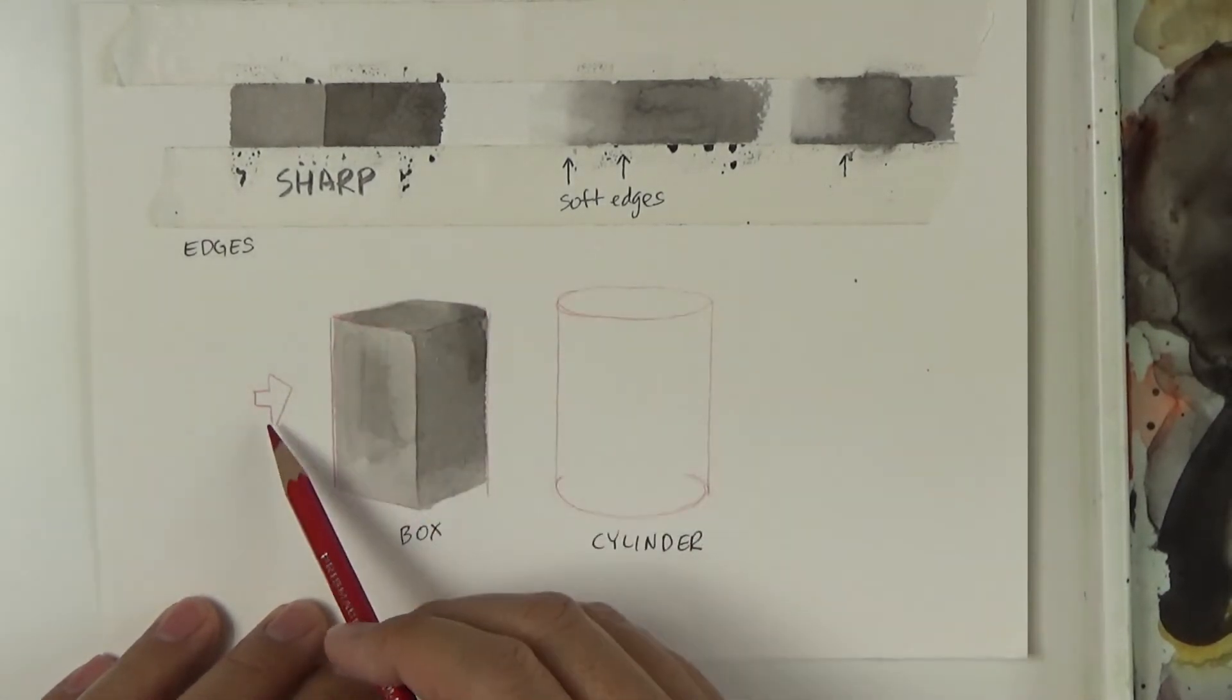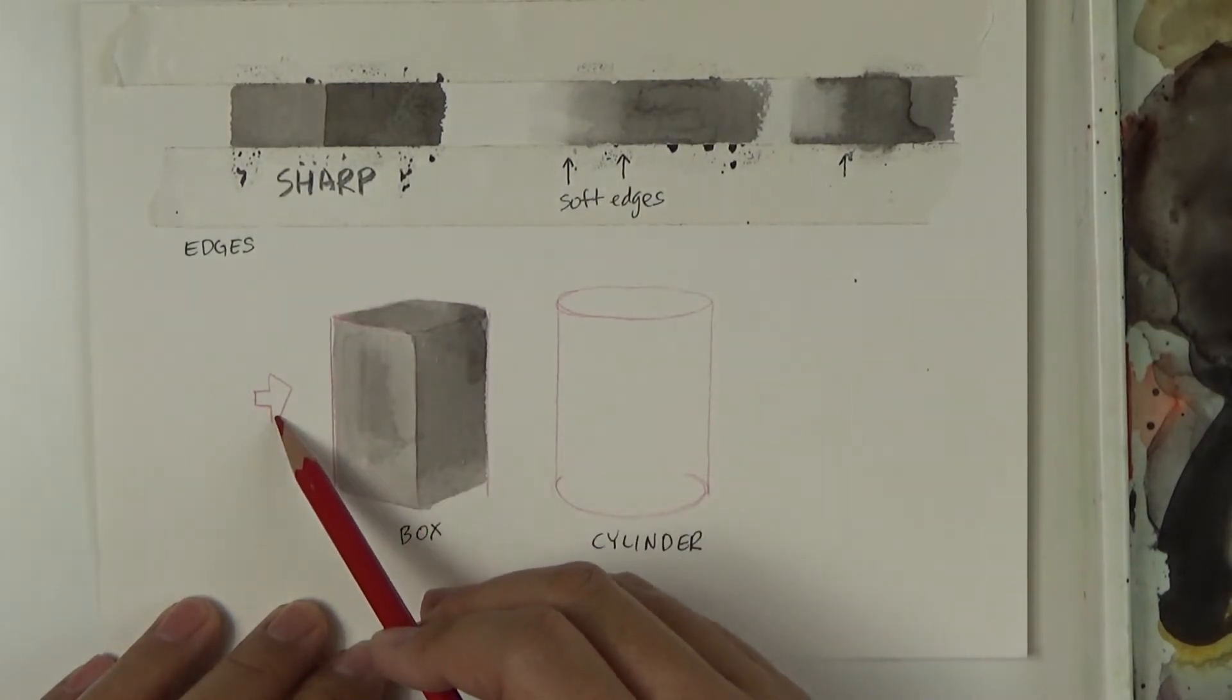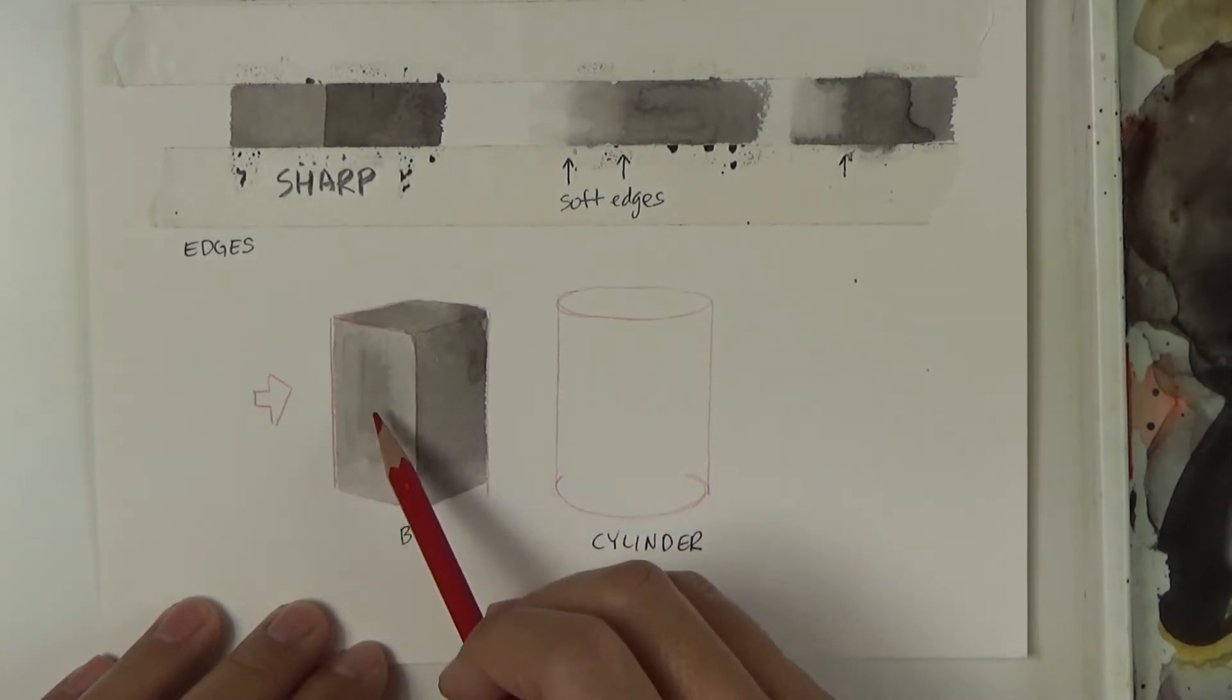So it's going to come in this way. If it was coming in up top then this would be lighter. But I'm going to lower that light so it's coming in from the left. So this is going to be your darkest area.